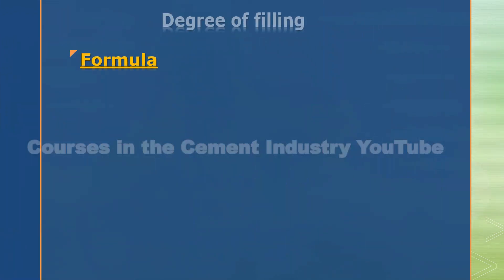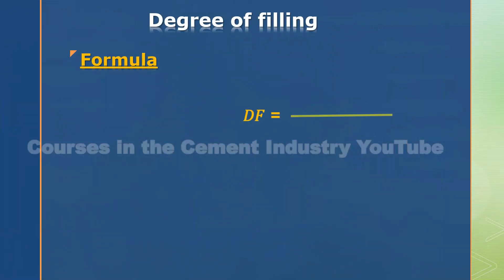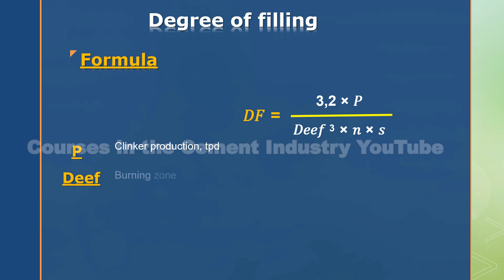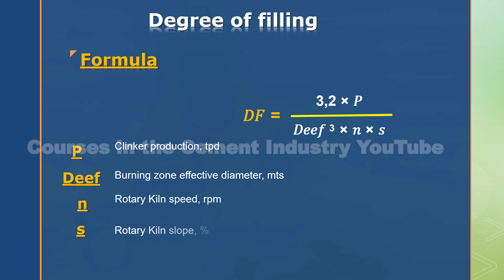Degree of filling formula: DF equals — where P means clinker production, DEF means burning zone effective diameter, N means rotary kiln speed, and S means rotary kiln slope.